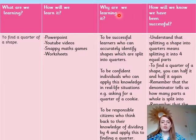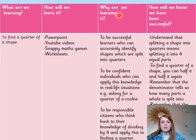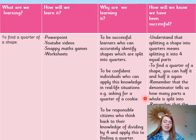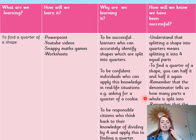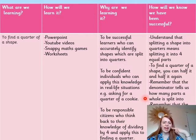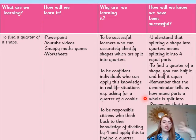Why are you learning this? Well, you want to be a successful learner who can accurately identify shapes which are split into quarters. You want to be individuals who can apply this knowledge in real life situations — for example, asking for a quarter of a cookie, or if you need to split a cookie into quarters for yourself and three friends to share. You also want to think back to your knowledge of dividing by four and apply this to finding a quarter, so you already have some prior knowledge that you can use here.